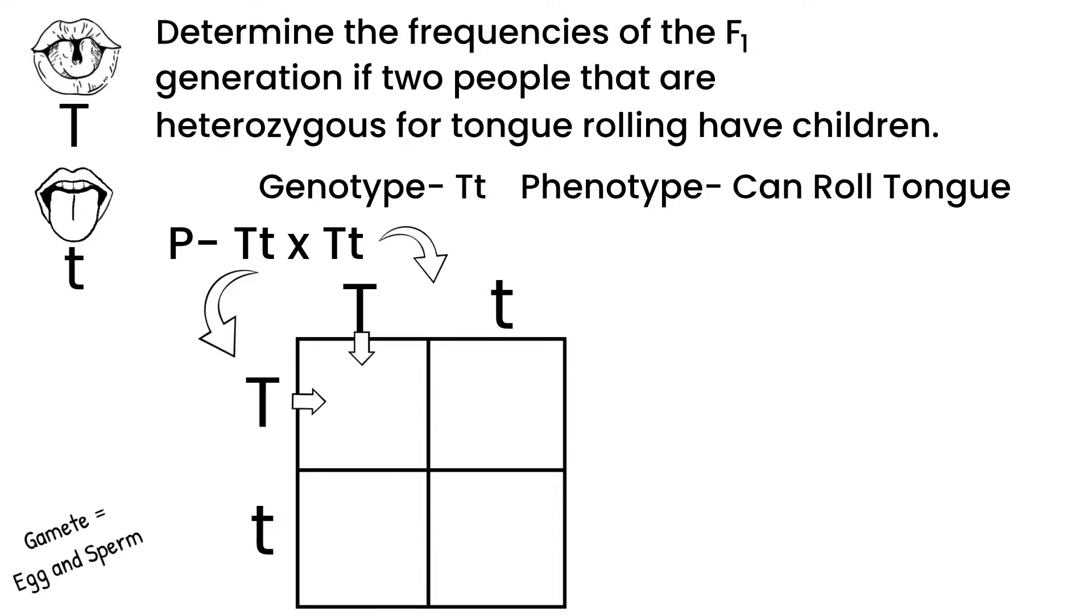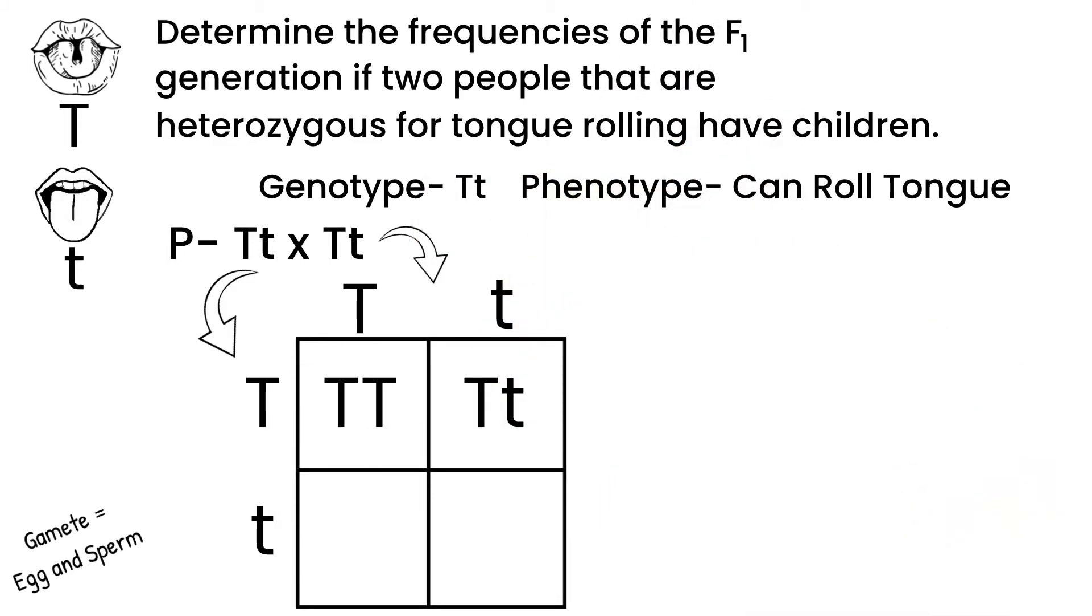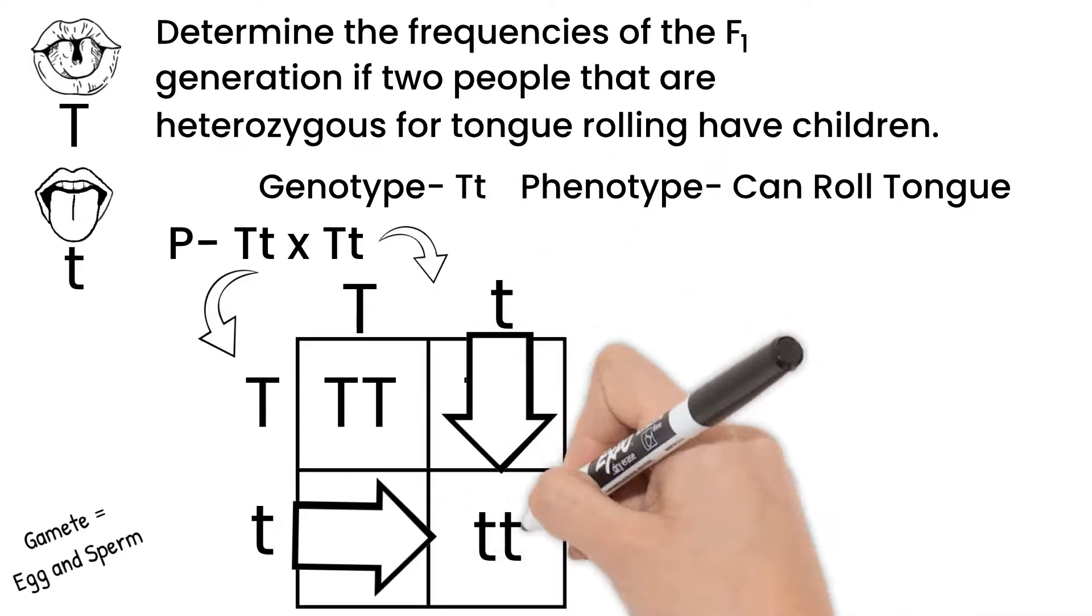So these combine for two capital Ts. Here, a capital and lowercase. Same thing in this box. And this last one would have two lowercase t's.